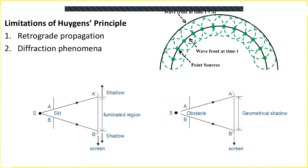There were some limitations identified by critics of the wave theory. If each point acts as a source of spherical disturbance, there's a forward wave as well as a backward wave — but Huygens' principle doesn't explain what happens to the backward wave. It also cannot explain diffraction: when light falls on a slit or obstacle, light tends to bend around the corners, and Huygens' construction cannot account for this.